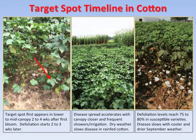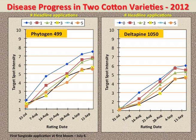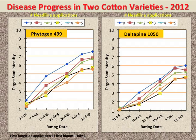Cooler and drier weather patterns can often occur in early to mid-September to stop further target spot development. These slides illustrate the development of target spot on the susceptible Phytogen-499 and moderately susceptible DPL-1050 in 2012. While there is a lag in disease severity ratings for DPL-1050 compared with Phytogen-499, leaf spotting and defoliation associated with target spot rapidly accelerated. By September, defoliation ratings above 7 recorded for Phytogen-499 represent greater than 75% defoliation.